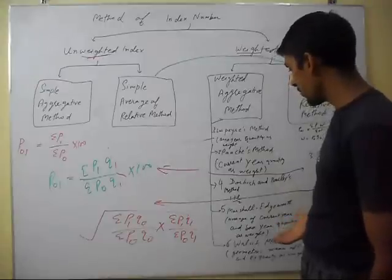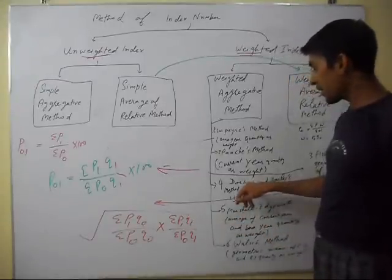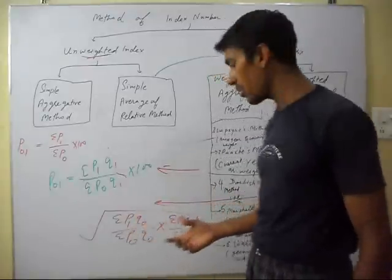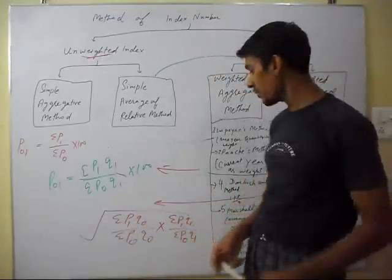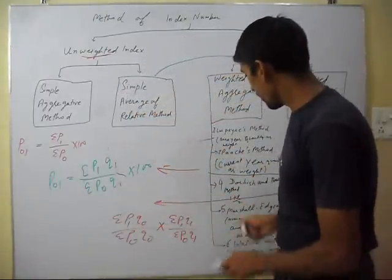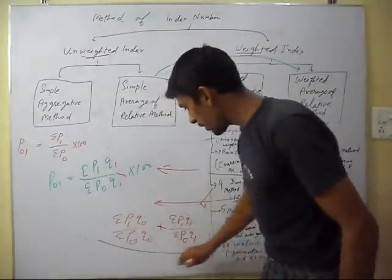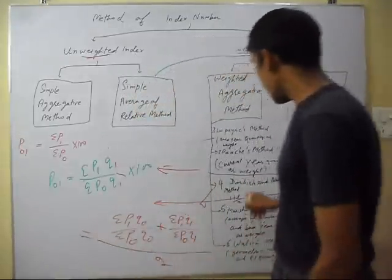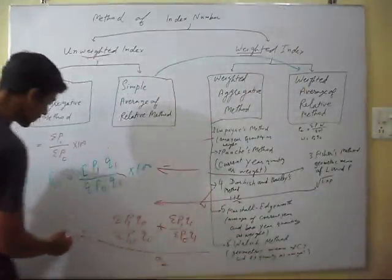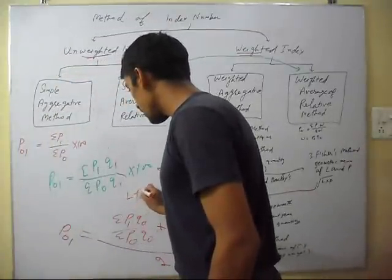Next is the Dorbish and Bowley method. This is the arithmetic average of Laspeyres and Paasche. In simple terms, it is L plus P divided by 2.